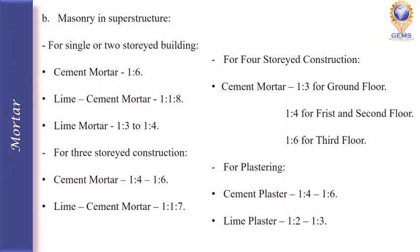For masonry in superstructures for single or two-storey buildings: cement mortar ratio is 1:6, lime cement mortar is 1:1:8, and lime mortar ranges from 1:3 to 1:4. For a three-storey building, cement mortar is 1:4 to 1:6, while lime cement mortar is 1:1:7. For a four-storey building, cement mortar for the ground floor is 1:3, for the first and second floor it is 1:4, and for the third floor it is 1:6.